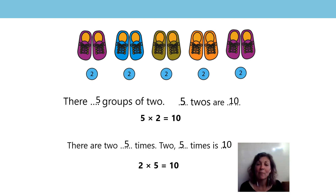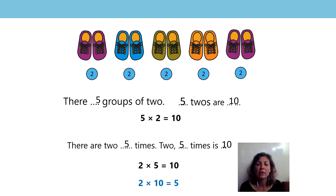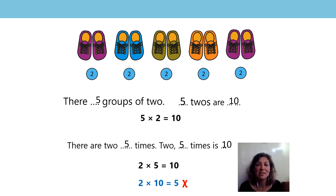Did you write it like that? So what does the 2 represent now? That's right, it still represents the 2 shoes in each group. And what does the 5 represent? The 5 represents the number of groups. And the 10? How many shoes we have altogether. Is this equation correct down here — does this equation represent what we see in this picture? Did you say it was wrong? That's correct: 2 times 10 is 20, two 10s are 20. Yes, that is an incorrect equation. Well done.